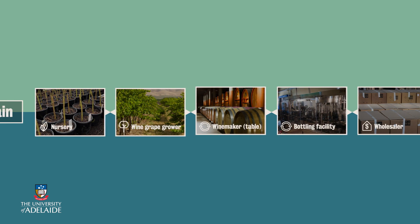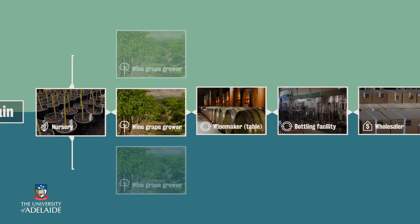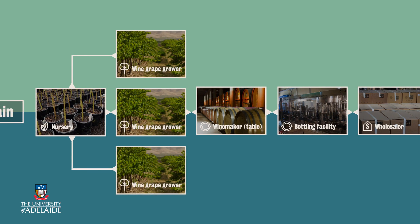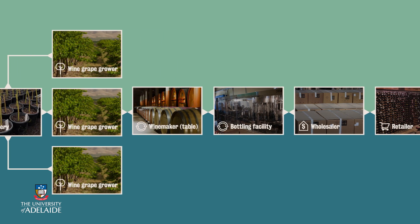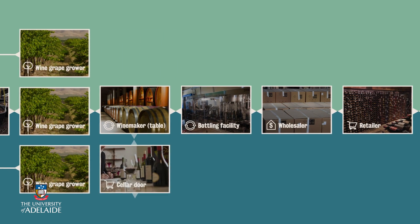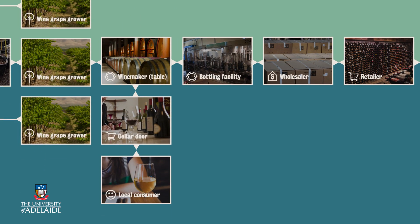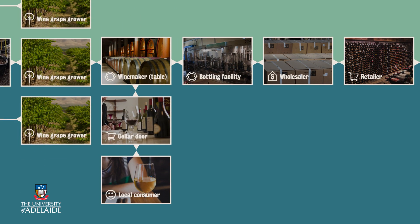This wine business is also likely to have multiple grape growers supplying them with grapes. The business may also have a cellar door, which is an outlet at their winery, where they can sell branded individual products of wine directly to the consumer when they visit their site.